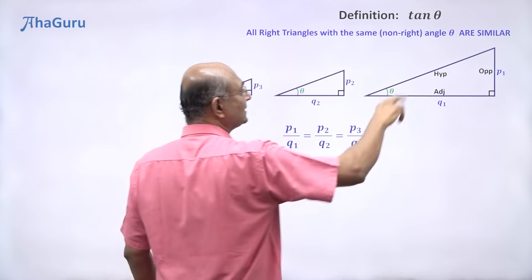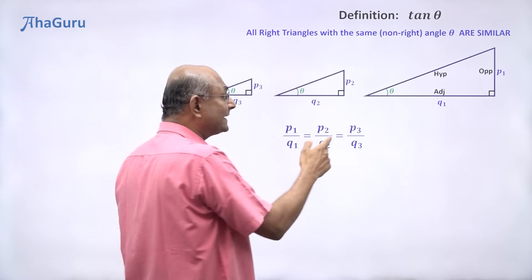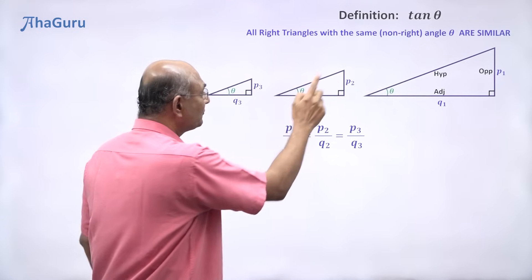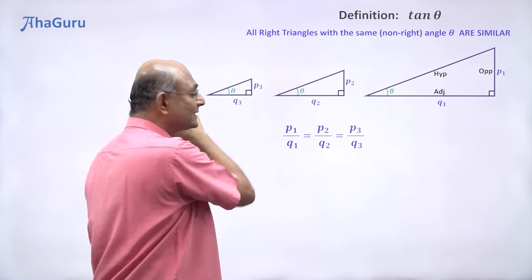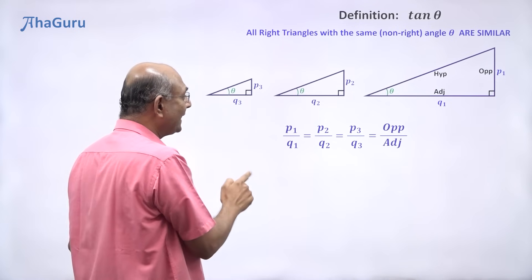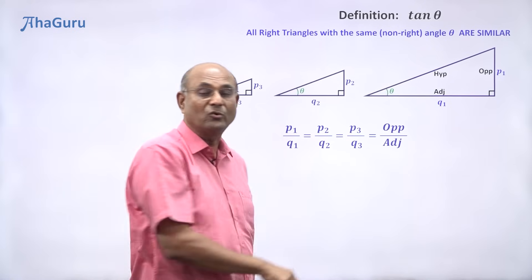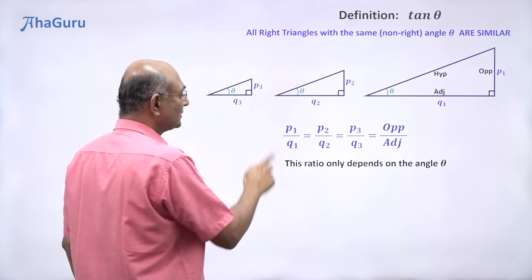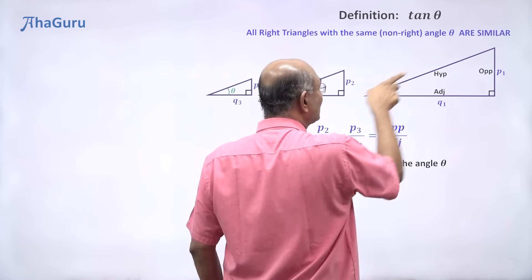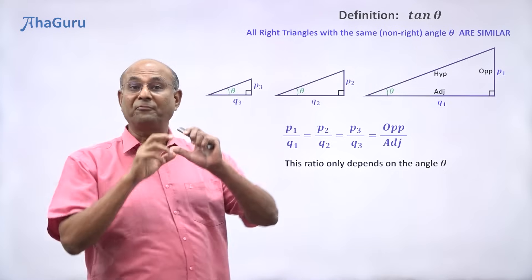Each of these ratios belongs to one triangle: P1/Q1 for the first triangle, P2/Q2 for the second, P3/Q3 for the third. Now P1/Q1 clearly doesn't depend on the specific values of P1 or Q1. Why? Because here Q2 is smaller and P2 is also smaller, but the ratio is the same. The ratios are the same for all three triangles. But what is the same for the three triangles? Angle theta. So opposite by adjacent depends only on the value of theta.